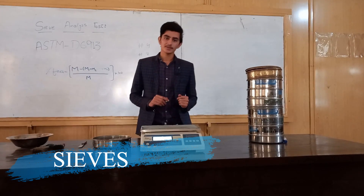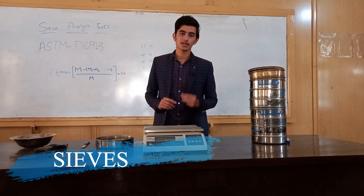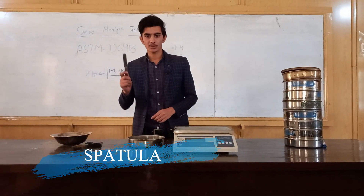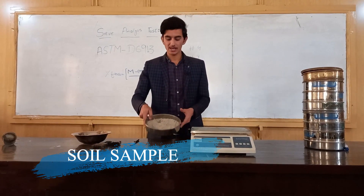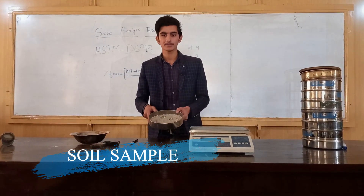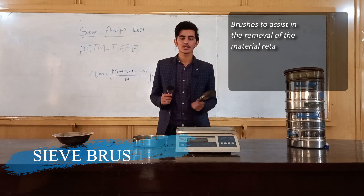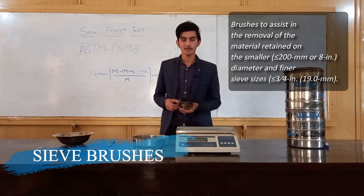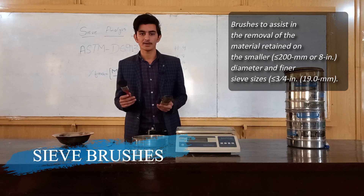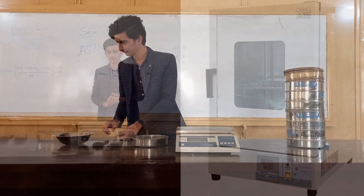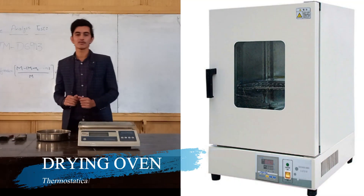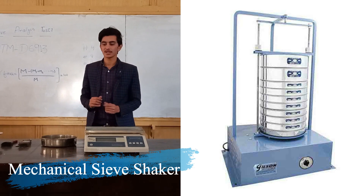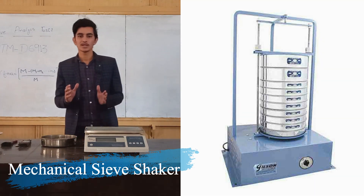Sieve number 4 means we have four square openings in one linear inch, and the same is the case with the other sieves. We have a spatula to mix the soil sample thoroughly. We also have brushes for cleaning the sieves — the bigger one is used for larger sizes like 4, 8, and 16, and the smaller one is used for sieve number 200, which has a smaller opening size. The next thing we have is a dry oven, where we usually dry the sample at 110 degrees centigrade. And the final thing we have is a mechanical shaker, used to shake the sieves thoroughly.